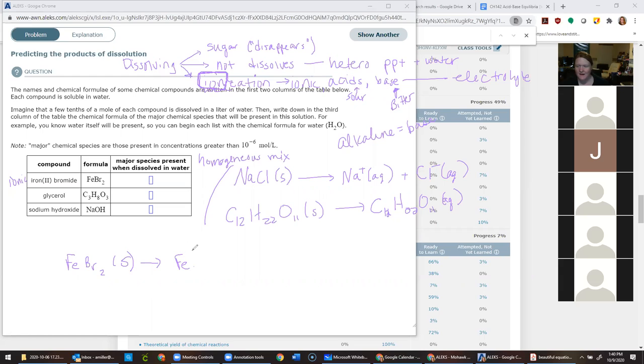If we take iron II bromide and mix it with water, the question is what kind of compound is that? Ionic or covalent? We got a bunch of people saying ionic. So this one is ionic, which means it's going to ionize. And so now to answer this question we have to figure out what it will ionize into. It's a solid. So we're going to ionize this. What is it going to break up into? We have the example NaCl. The ionic compound NaCl breaks up into the cation Na+ and the anion Cl-.